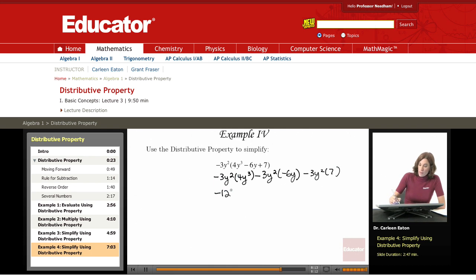Remember that if I'm multiplying y squared times y cubed, what I'm going to do is add the exponents. And that's going to give me y to the 5th.